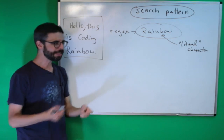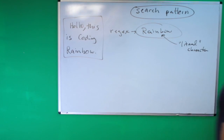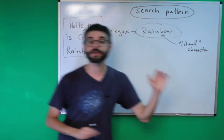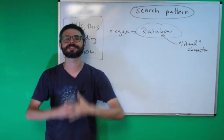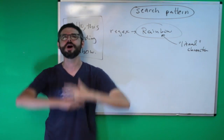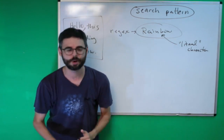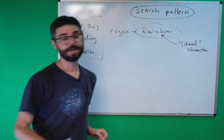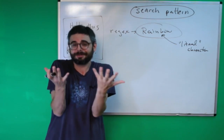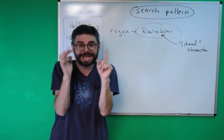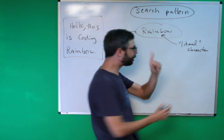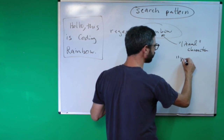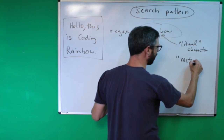You can imagine: if I go to a text editor and hit Command+F and type "rainbow," it will highlight every time rainbow appears. This is not super powerful yet, but when you add the concept of a meta character, things get interesting.